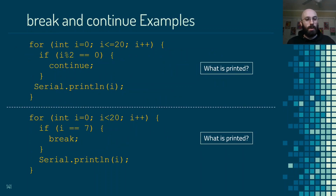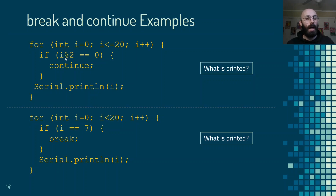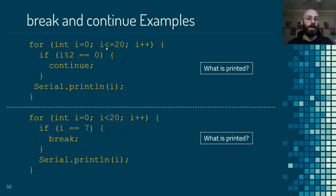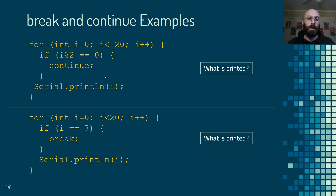Here's a continue example using a for loop: starting at i equals zero, going up while i is less than or equal to 20, incrementing by 1. Inside, we check if i mod 2 equals zero — checking whether i is even. If i is even, we hit the continue statement, which skips the Serial.println line and goes back up to do the update and check the condition again. The effect is that instead of printing all values from 0 to 20, it only prints the odd values, because even values trigger continue and are skipped.